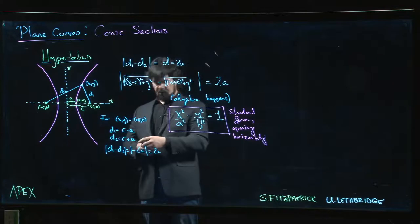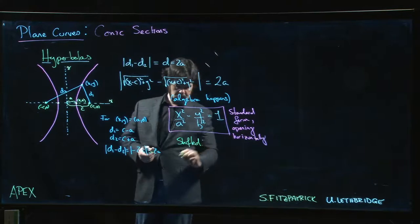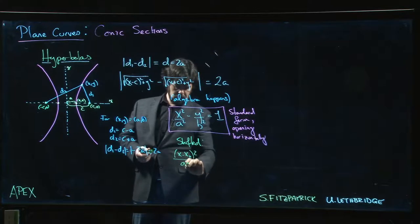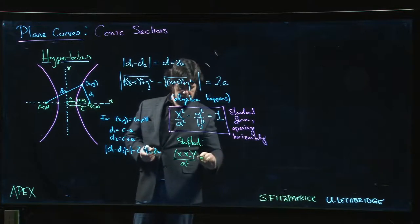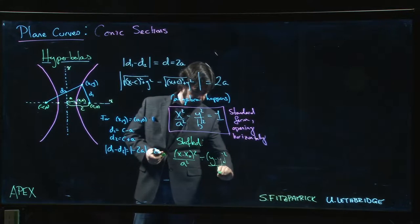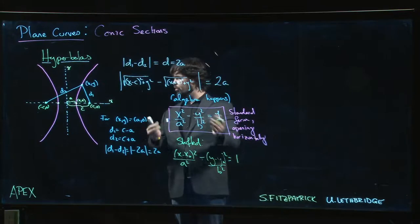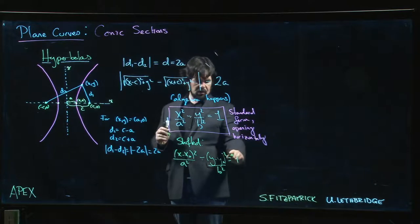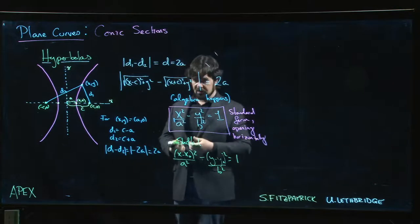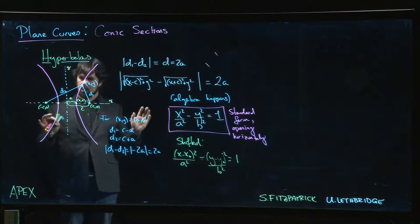That's the standard form. And then of course, as usual, you could also shift. If you want to shift, you're going to get something that looks like (x - x₀)²/a² + (y - y₀)²/b² = 1. If you want to capture both horizontal and vertical, you can put plus or minus one here—the minus one would correspond to vertical, plus one to horizontal. That's what you get.